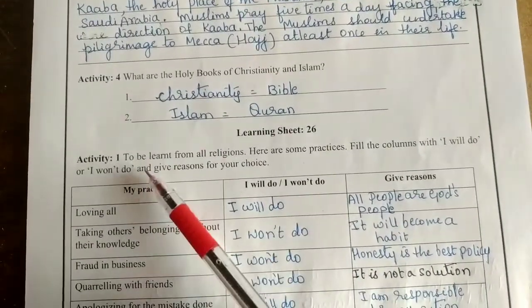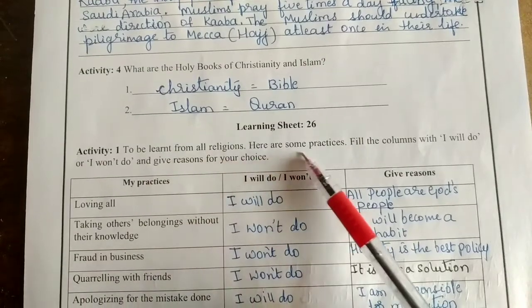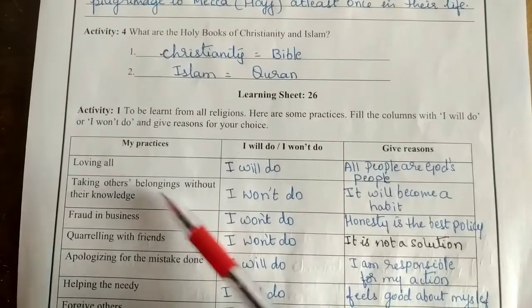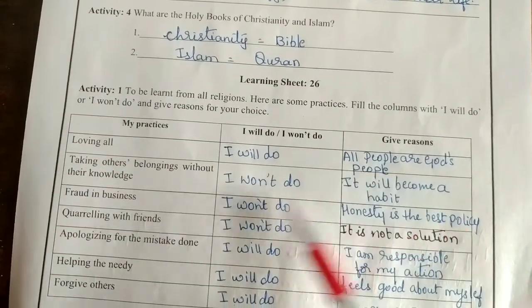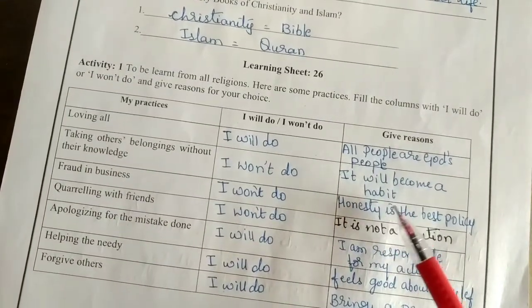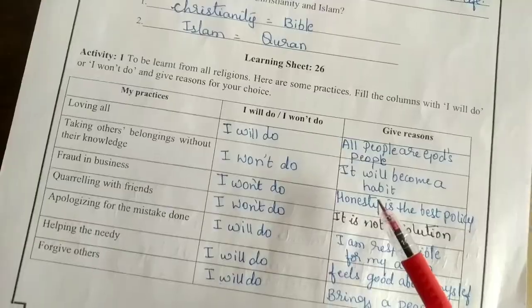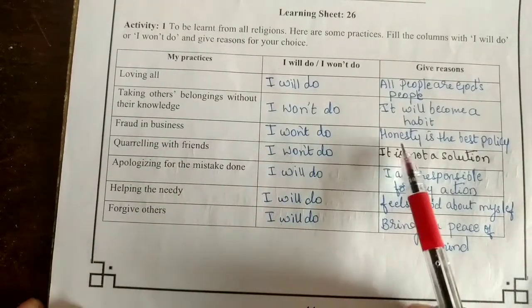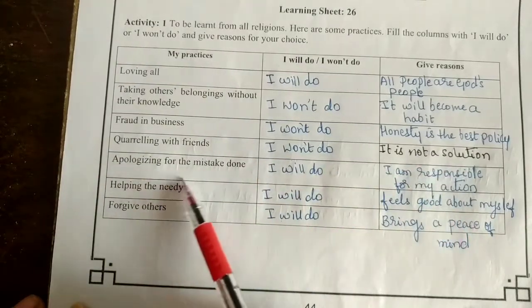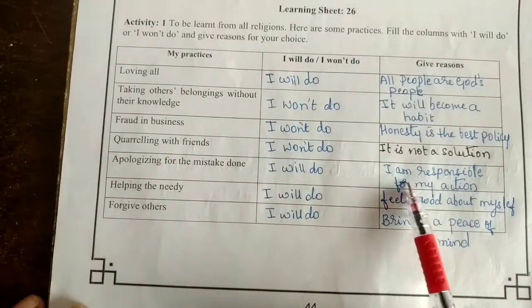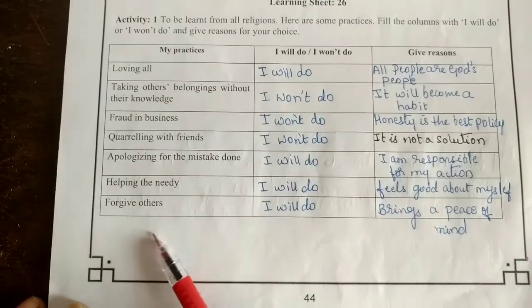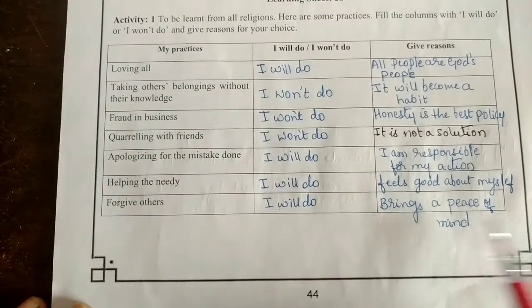Learning Sheet 26: To be learned from all religions. Here are some practices. Fill the column with 'I will do' or 'I won't do' and give the reason. Loving all — I will do. All people are God's people. Taking others' belongings without their knowledge — I won't do. It will become a habit. Fraud in business — I won't do. Honesty is the best policy. Quarrelling with friends — I won't do. It is not a solution. Apologizing for a mistake done — I will do. I am responsible for my action. Helping the needy — I will do. It feels good about myself. Forgive others — I will do. It brings peace of mind.